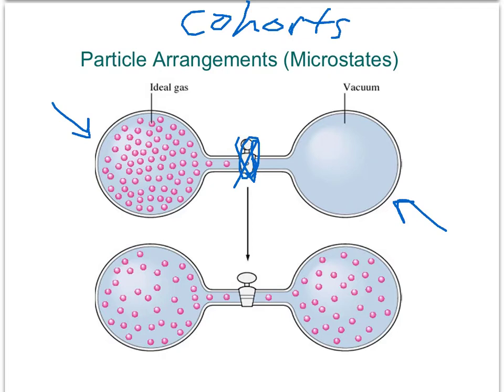As you might imagine, a real system wouldn't contain just 50 particles. It would actually contain something like an Avogadro's number, or 10 to the 23rd, number of particles. The second drawback of the 50-particle system is that 50 particles is actually too many to introduce the basic ideas of positional entropy within the confines of a PowerPoint slide.